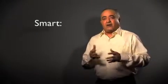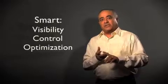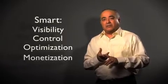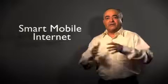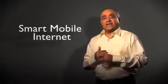Let's take a look at the whole picture now. If an operator has these four degrees of intelligence - the visibility, the control, the optimization capabilities, and the monetization capabilities - collectively we call this the smart mobile internet because you have these four layers of intelligence.